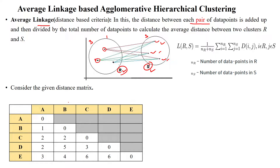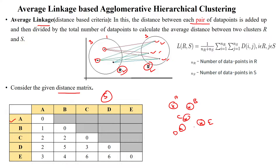Here, a distance matrix is directly given for five data points: a, b, c, d, and e. All five data points are initially treated as single-element clusters. The distance matrix is computed using Euclidean distance: a to b is 1, a to c is 2, a to d is 2, and a to e is 3.